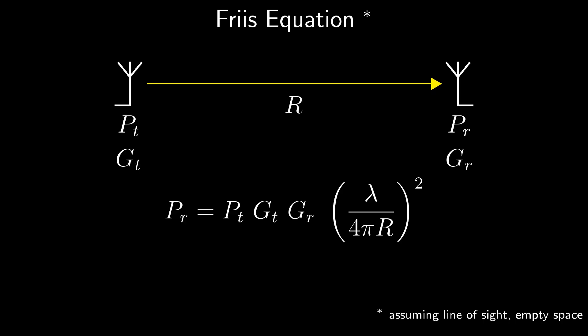The R in the Friis equation is what we actually care about, the distance between the two antennas. At first glance, this equation looks pretty bad for us given that the R is in the denominator and gets squared. The good news is that even consumer-grade Wi-Fi equipment is really good at decoding signals with less than femtowatts of signal strength.